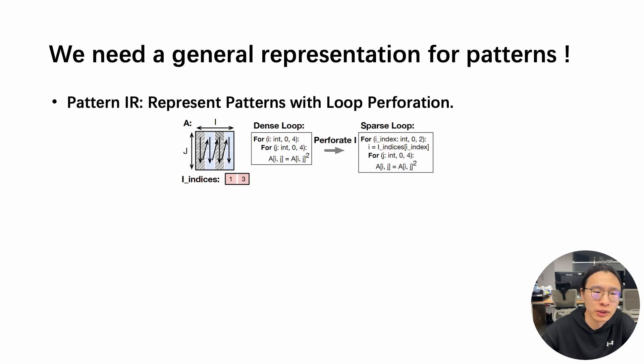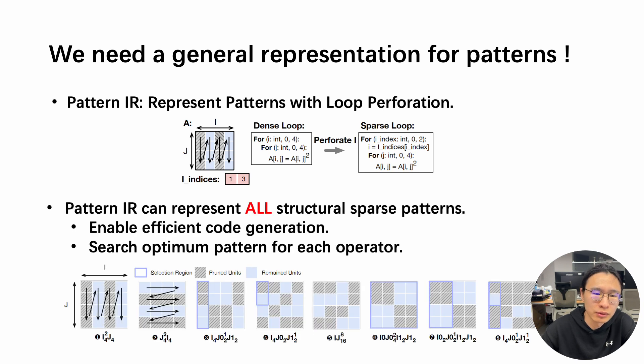The first thing we need is a general representation for different structural patterns. In this work, we propose pattern IR which represents different patterns by perforating different loops. This can represent all structural sparse patterns and enable efficient code generation and search for the optimum pattern for each operator.